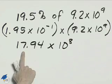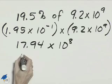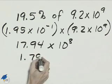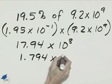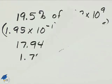We need to write this in scientific notation, so this decimal needs to move to the left one place. That means this will be 1.794 times 10 to the 9th power because 8 will increase by 1.